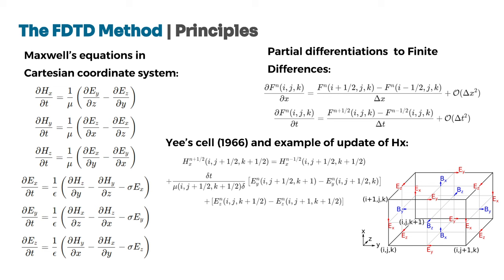The steps of the FDTD analysis can be described as follows. First, by expressing Maxwell's equations in Cartesian coordinates, we obtain the six scalar partial differential equations. Next, partial differentiations with respect to time and space variables will be approximated by differences. For example, the equation for the X component of the H field is demonstrated in this slide. Finally, the Yee grid will be used to locate the electric and magnetic fields in the discretized space.